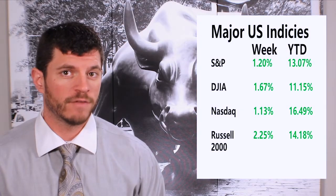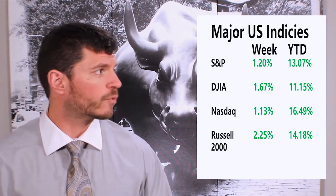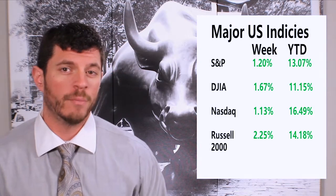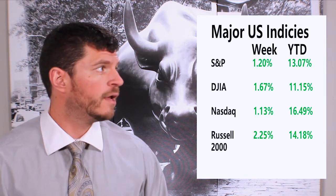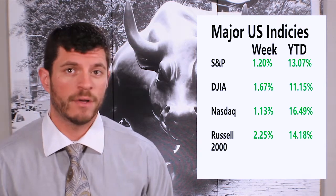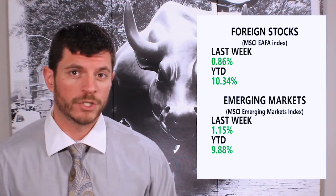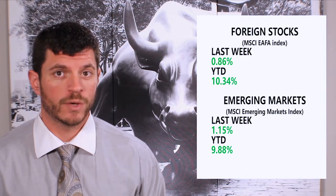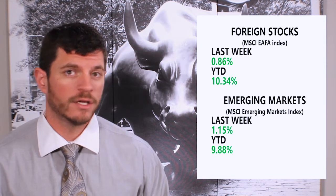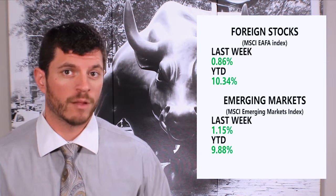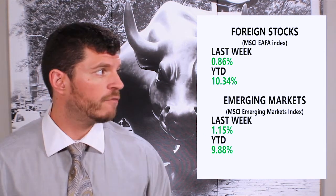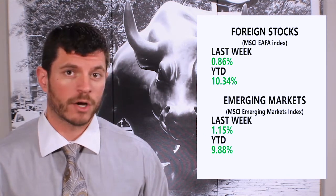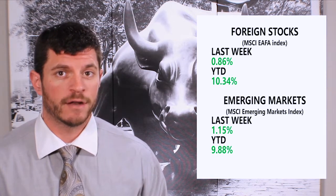All of the U.S. indexes were positive last week, with the Russell 2000 leading the way up over 2%, and now up over 14% for the year. The S&P 500 was up about 1.2%, and is now up 13%. Foreign and emerging market stocks were also positive last week, with foreign market stocks up just under a percent, while emerging markets were up over 1.1%, and now foreign and emerging markets are both up about 10% for the year.